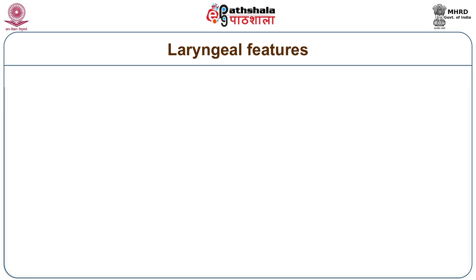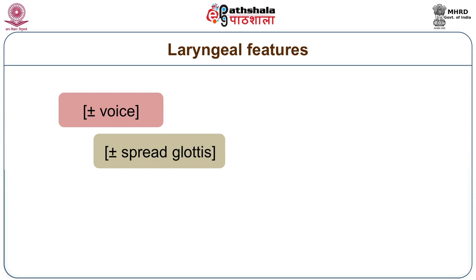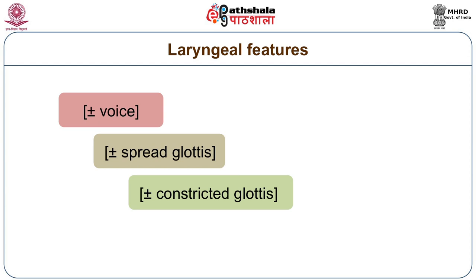Laryngeal features are features which deal with the larynx — the position of the vocal folds in the larynx. There are many different types of sounds produced by the larynx. The following are most important: plus/minus voice — when the vocal cords vibrate we have plus voice; when they do not vibrate and are kept apart we have minus voice. Plus/minus spread glottis — when the glottis is widely spread we get aspirated sounds; when not widely spread we get unaspirated sounds. Plus/minus constricted glottis — these are sounds which are glottalized, either glottal stop or glottalized sounds, including both glottalized and pre-glottalized consonants and vowels.